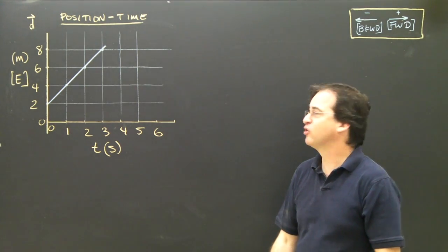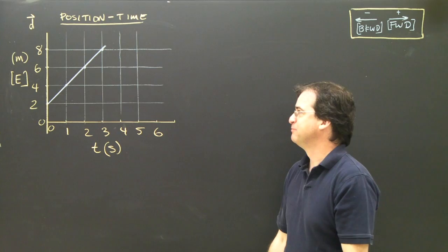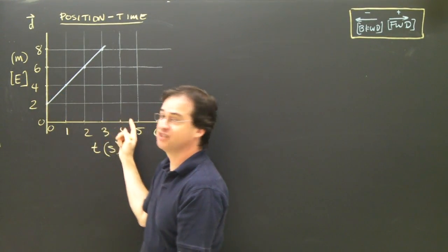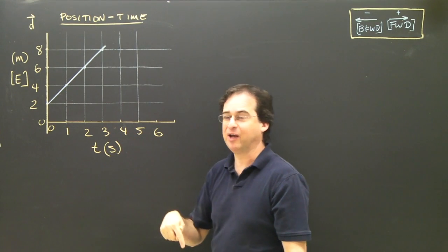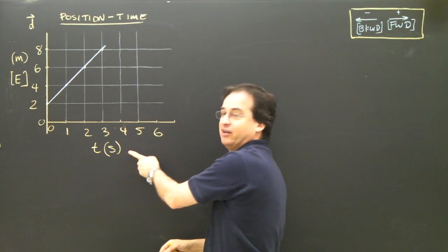Here we have a position time graph, and we're going to try and put some numbers to this, and figure out what this object is doing. The first thing we want to do is look at it. It's a position time graph, which tells me where I am at any given time. The units I'm using are meters here, and here it's seconds.